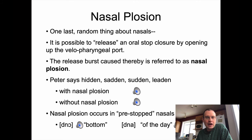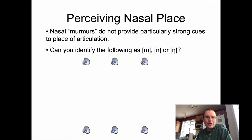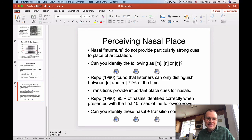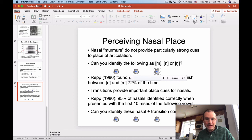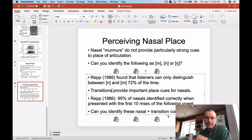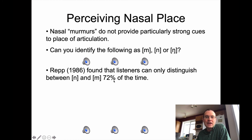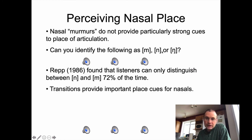I usually do this experiment in class — I'll play through three different nasal murmurs and have people try to identify if they're M, N, or engma. These are all Peter Ladefoged producing these segments. The first one is alveolar, the second is bilabial — that's an M — and this is the engma. That's hard to do. A study by Bruno Repp found that people can only distinguish between these nasals 72% of the time, but you get more help if you get those transition cues.